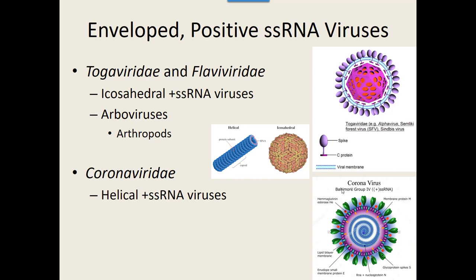The Togaviridae and Flaviviridae are grouped partly because of their shape — they have an icosahedral capsid. A lot of the viruses in these two groups are called arboviruses, meaning they're spread by arthropods — spread by insects. The Coronaviridae, the other group, has a different helical-shaped capsid, and a lot of the coronaviruses are not spread by arthropods. That's how we divide our groups of enveloped positive-sense RNA viruses.